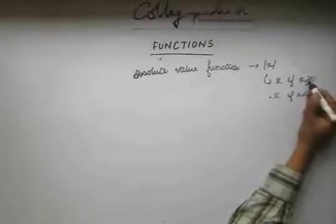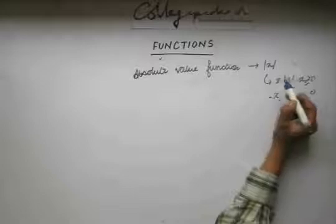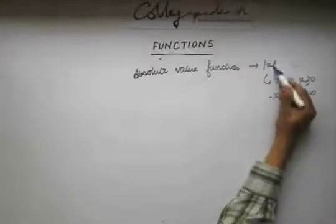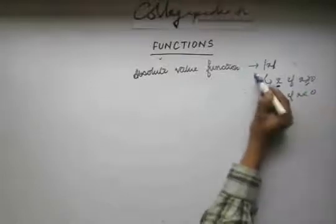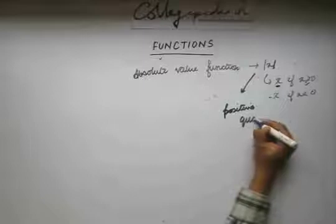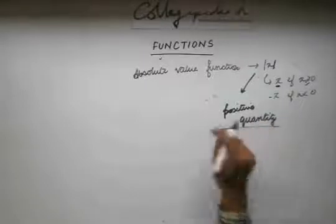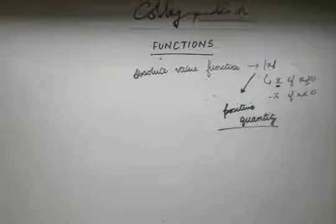A few standard functions are, for example, the absolute value function. This is denoted by mod x. This is equal to x if x is greater than 0, and it is equal to minus x if x is less than 0. The absolute value function is always positive, because if x is greater than 0 then x is itself positive, and if it's minus x then minus of a negative quantity is a positive quantity. I won't discuss much on absolute value functions here as I have already discussed this when we were studying inequalities.